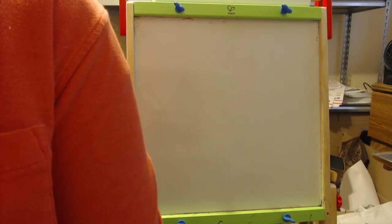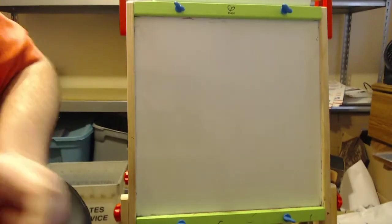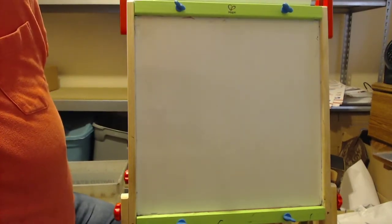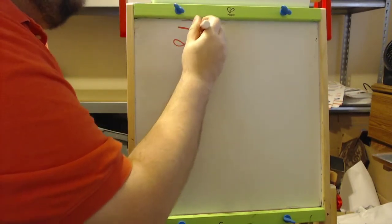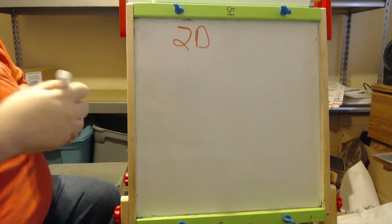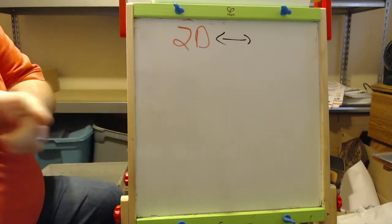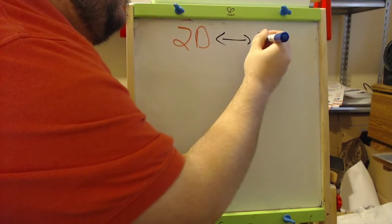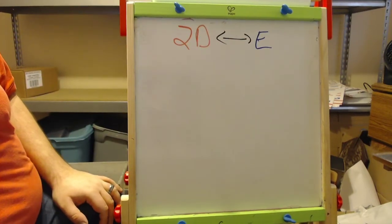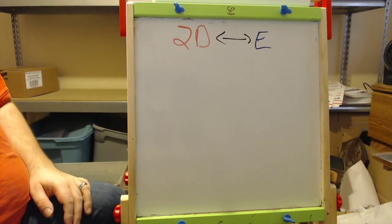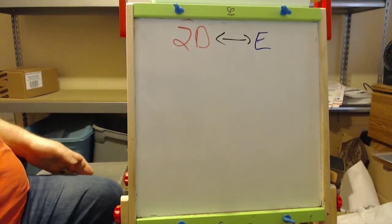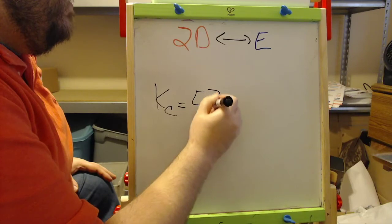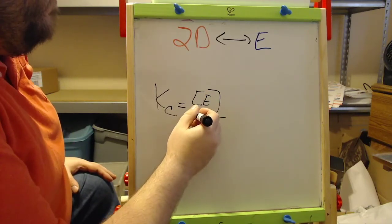A is at equilibrium and they want us to calculate KC. So the equation is 2D yields E, where D is red and E is blue. Before I take into account any of the data or volumes and concentrations, let's just write what our KC would look like. KC is products over reactants, so it would be concentration of E over the concentration of D squared.